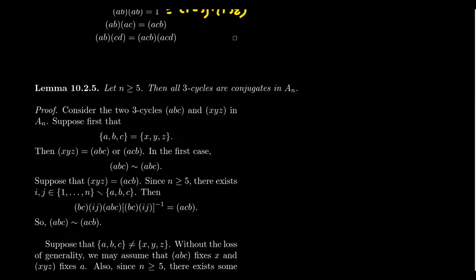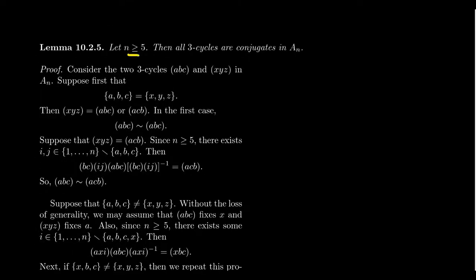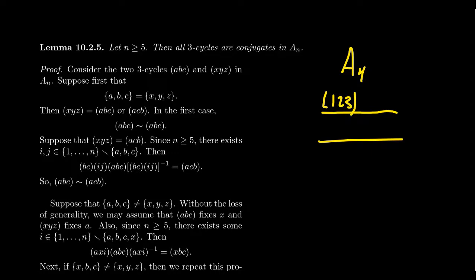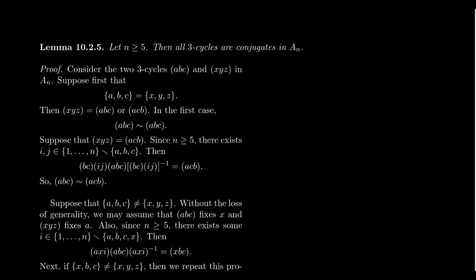Lemma 2: let n ≥ 5. Then all 3-cycles are conjugate in Aₙ. We proved previously that in Sₙ, permutations are conjugates if and only if they have the same cycle type, so in Sₙ all 3-cycles are conjugate. But that's not true in general for the alternating group. In A₄, for example, you actually have two different conjugacy classes of 3-cycles: (123) and its inverse (132) are not conjugates of each other in A₄. But if you have five letters, we can force conjugation between all 3-cycles.